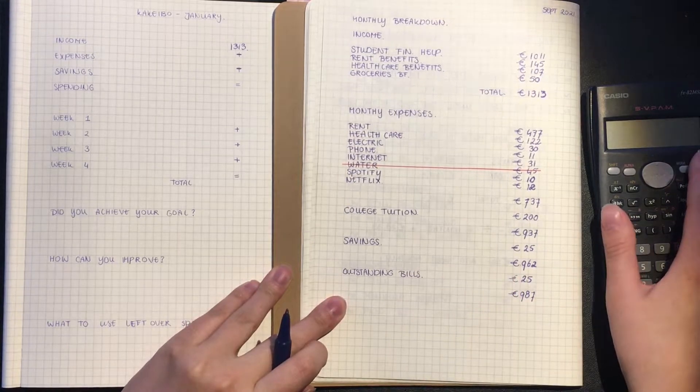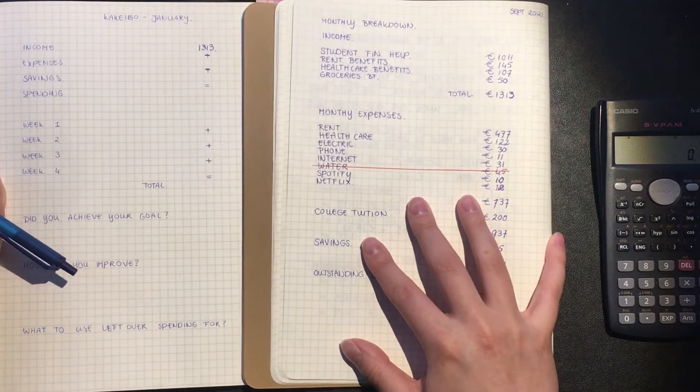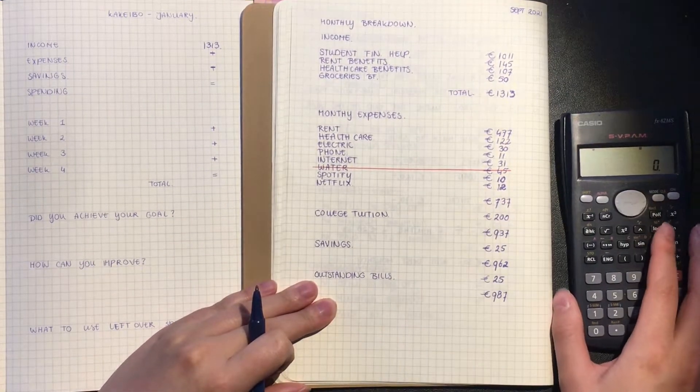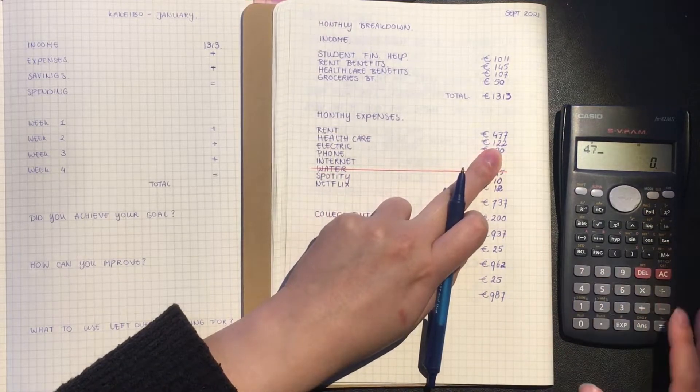Let's see, my income is the same as every month, which is 1313. For my expenses, they are not in frame, so let's put the calculator over here. There we go, we have the 477 for my rent.